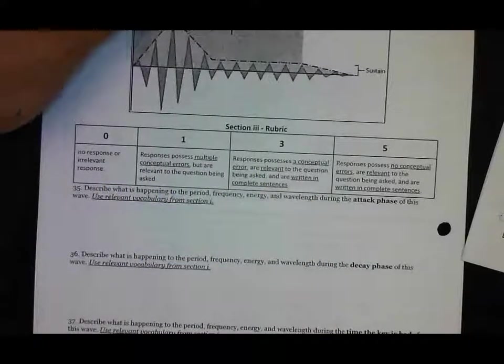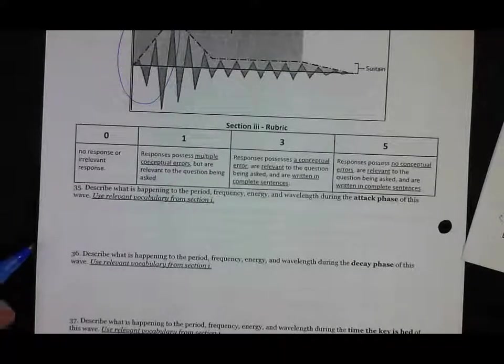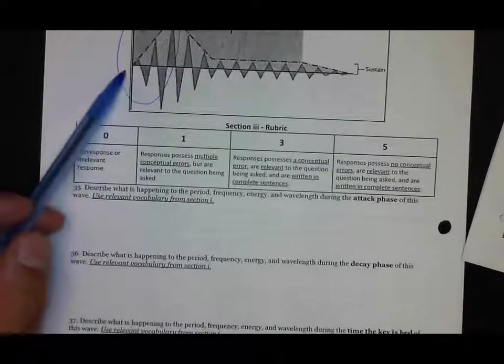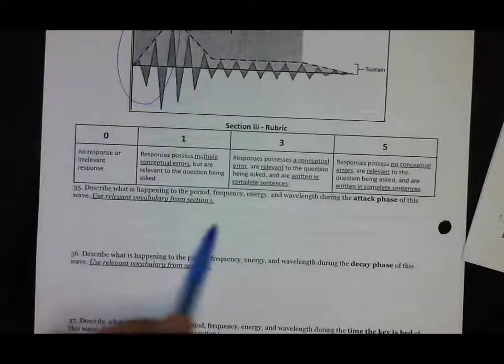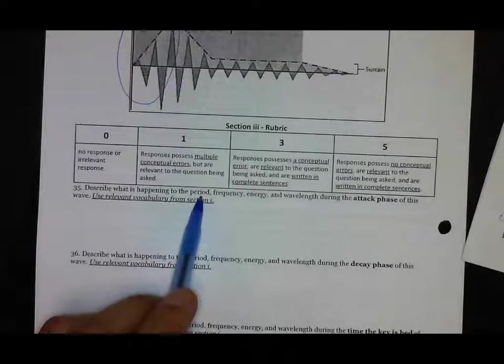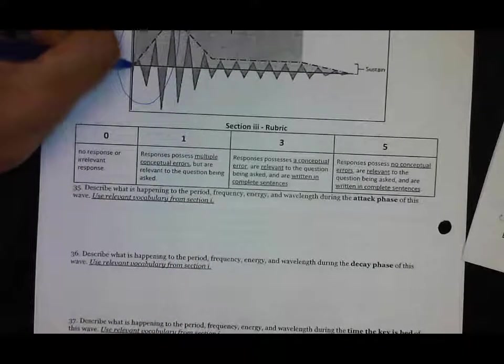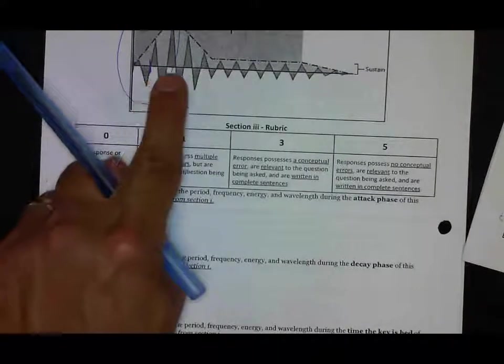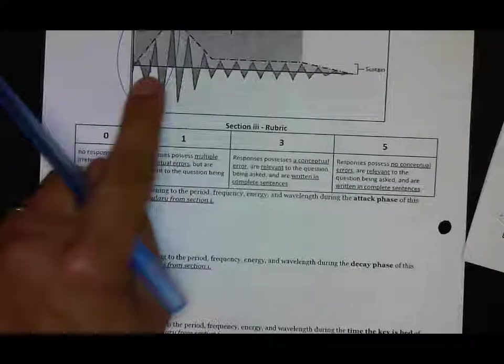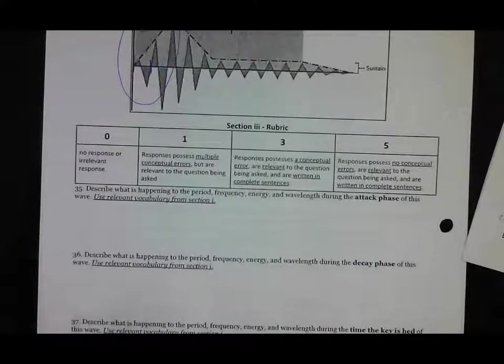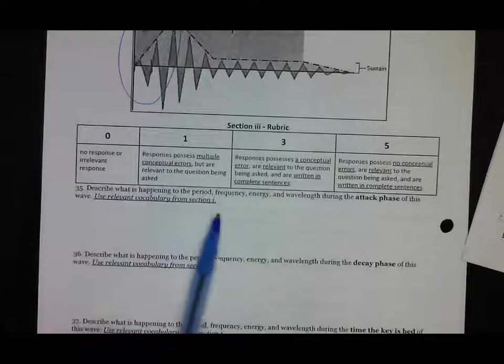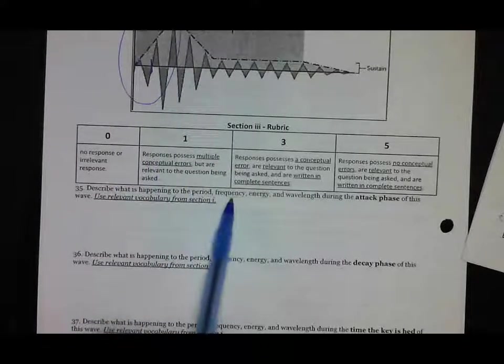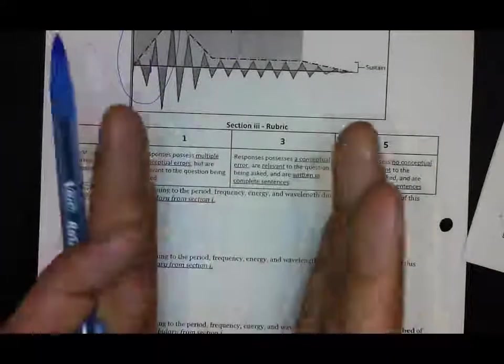For 35, you're going to describe what is happening to the period, frequency, energy, and wavelength during the attack phase. The attack phase is this phase, and here we have a pulse from a synthesizer that makes music. Let's talk about the period. The period is the time of one wave. So here's the time of one wave, and it looks to me like the individual wave peaks aren't really changing much with respect to one another.